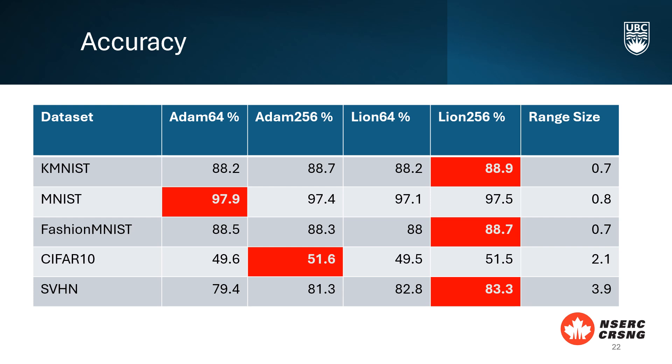AdamW has a slight edge over LION for CIFAR-10 dataset. LION outperforms AdamW for Fashion MNIST and SVHN dataset. Overall, LION performs better in some datasets but the improvements are not significant. It remains competitive.